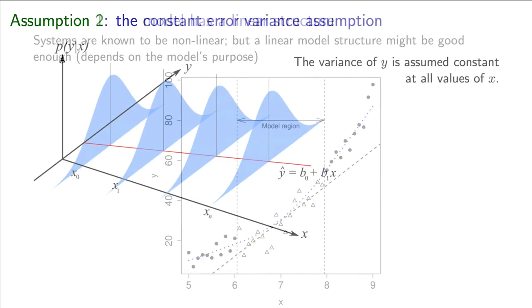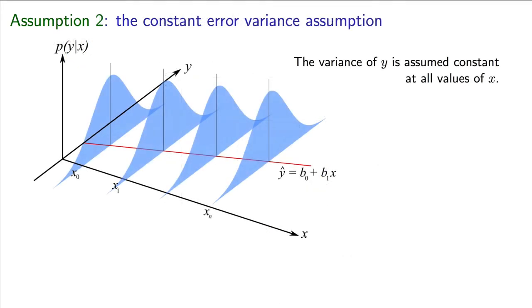The second assumption that is required is that the variance of y is constant at all values of x. x is assumed to be known, and therefore, that implies if we take a sample of our process at the same values of x, we will get different values of y. If we repeat this, every time we get a different value of y coming from these blue distributions, as shown over here.